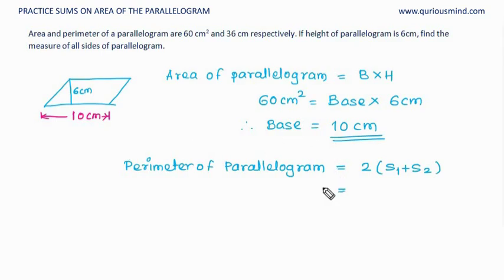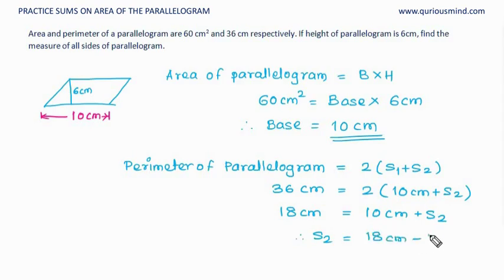Perimeter is given as 36 cm, and that is equal to 2 times S1 is 10 cm plus S2. This 2 goes that side, becomes divided by. So it becomes 18 cm. 18 cm is equal to 10 cm plus S2. Now this 10 cm goes that side. And therefore S2 is 18 minus 10, which is 8 cm.